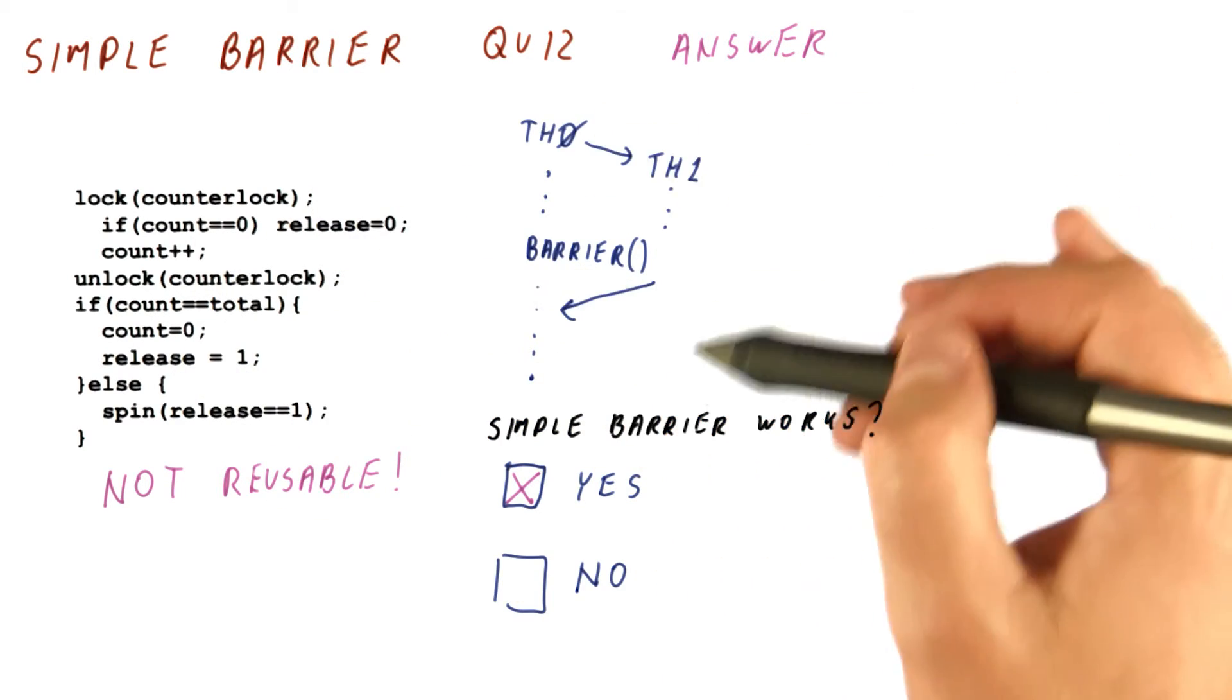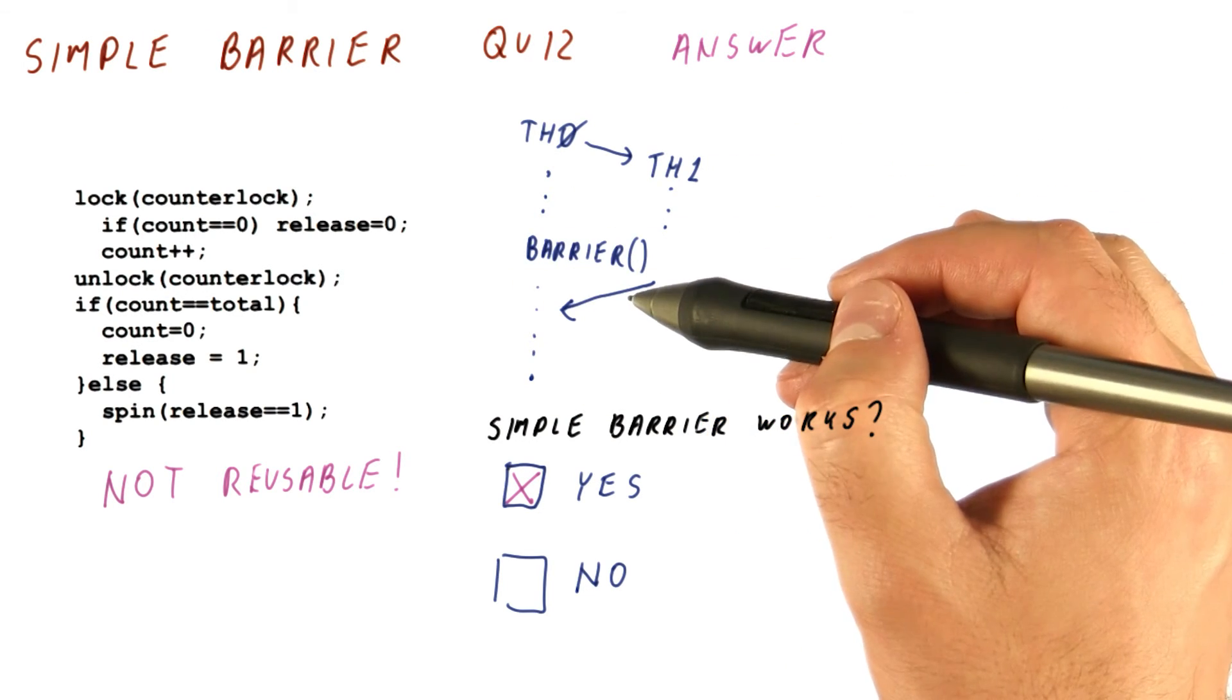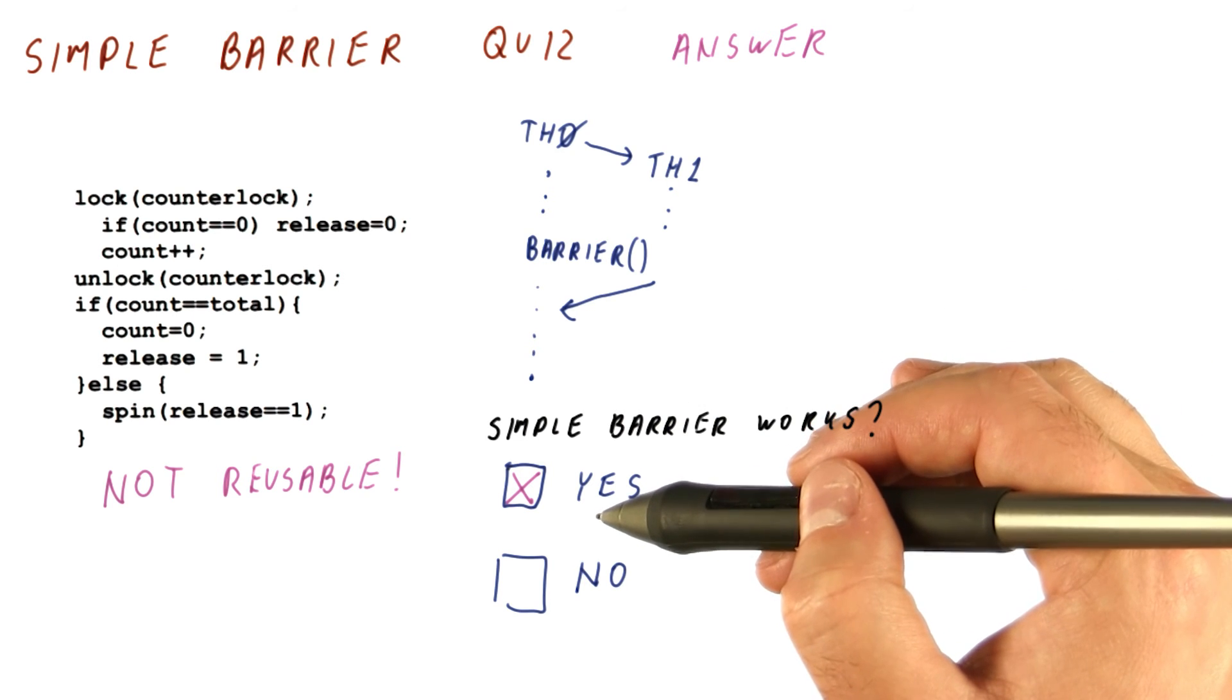So in this particular case, if we are sure that we are going to use this barrier only once in the entire run of the program, then this barrier does work correctly.